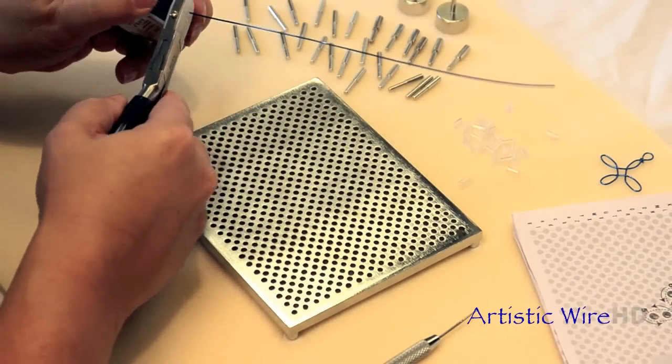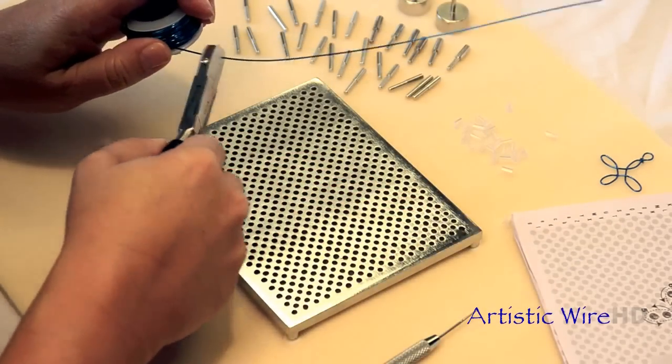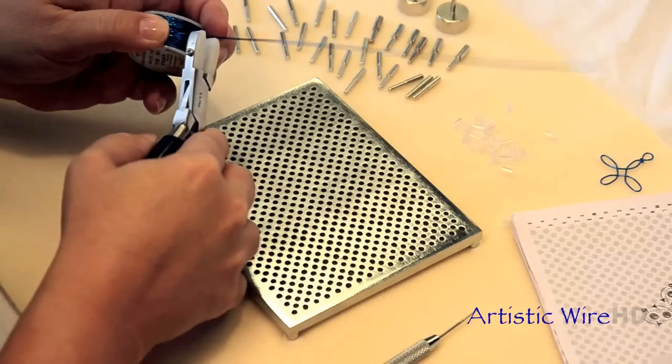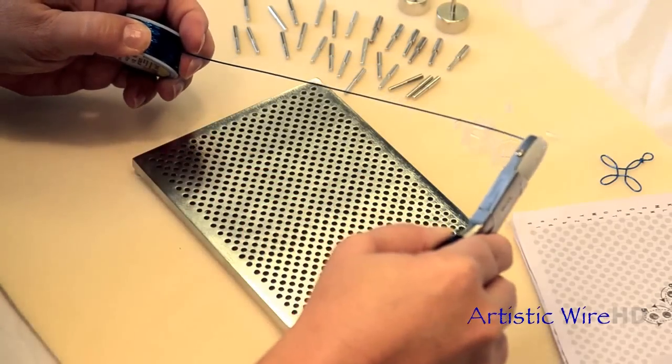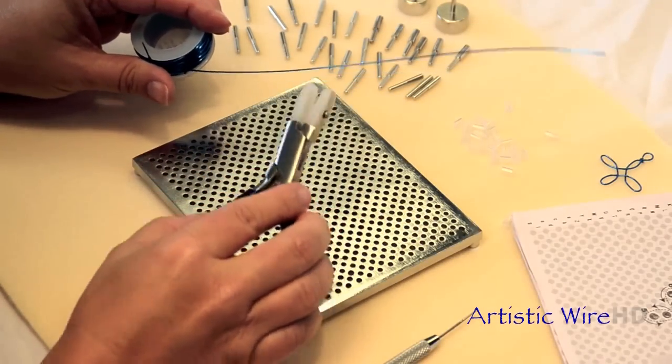They're really great to remove the kinks from the wire. They also help to strengthen the wire and to flatten your pieces.